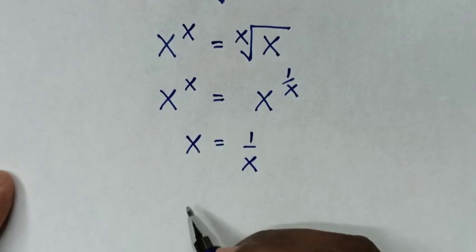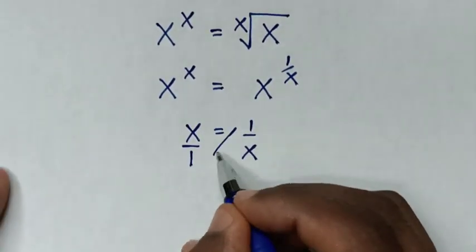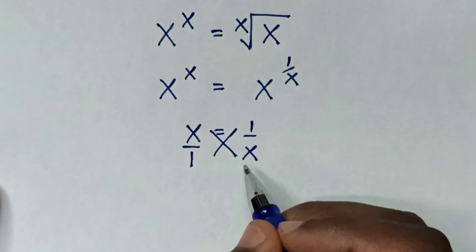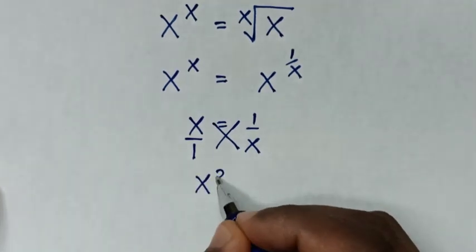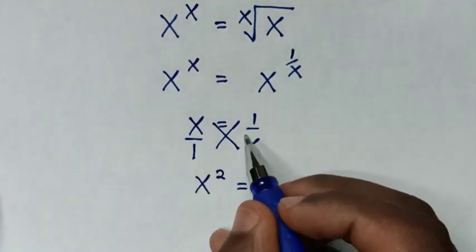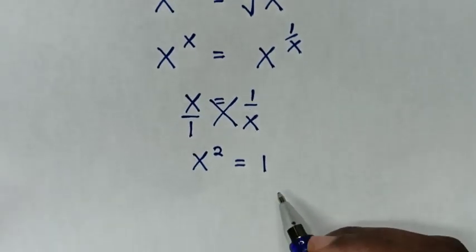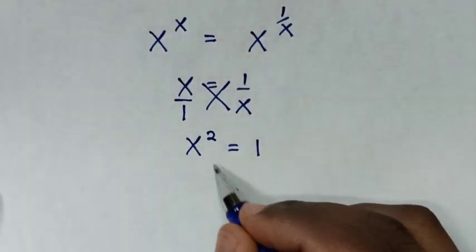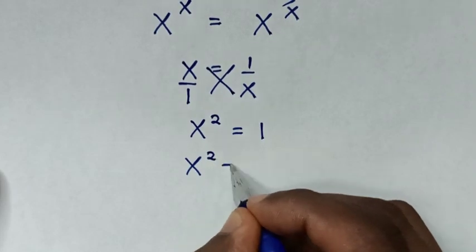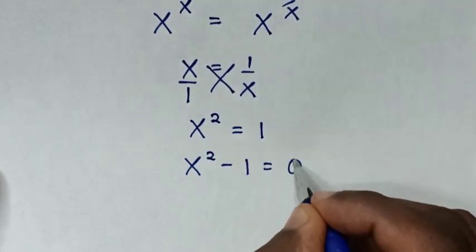Now from this, x is the same as x over 1, then we'll cross multiply. Then x times x is x squared, which is equal to 1 times 1 is 1. Then in the next step we take 1 to the left side, so it will be x squared minus 1 is equal to 0.